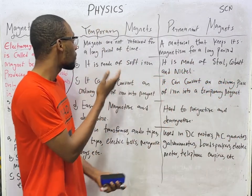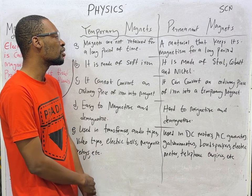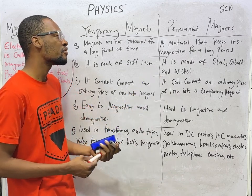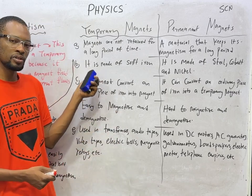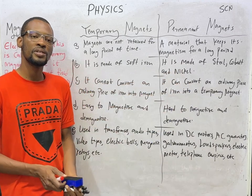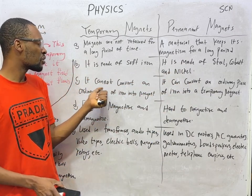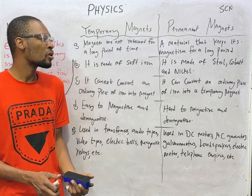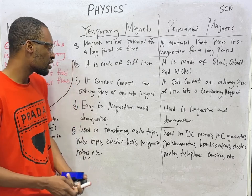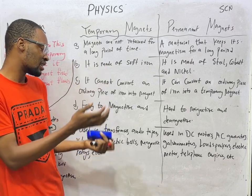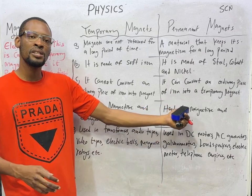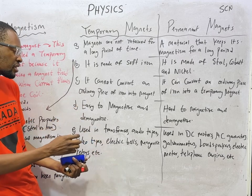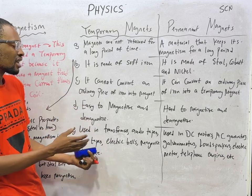So once again: temporary magnets — magnetism is not retained for a long period of time. Permanent magnets keep their magnetism for a long period of time. Temporary magnets are made of soft iron; permanent magnets are made of steel, cobalt, and nickel. Temporary magnets cannot convert an ordinary piece of iron into a magnet, but permanent magnets can convert an ordinary piece of iron into a temporary magnet. Temporary magnets are easy to magnetize and demagnetize; permanent magnets are not. Temporary magnets are used in transformers, audio tapes, video tapes, electric bells, and magnetic relays.